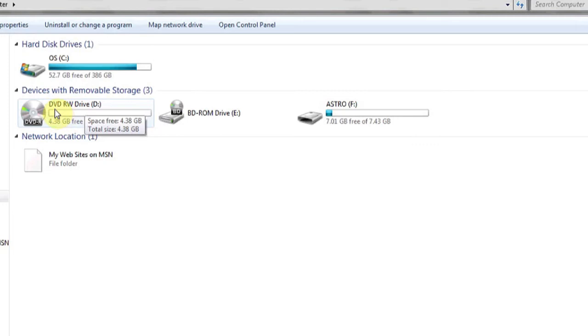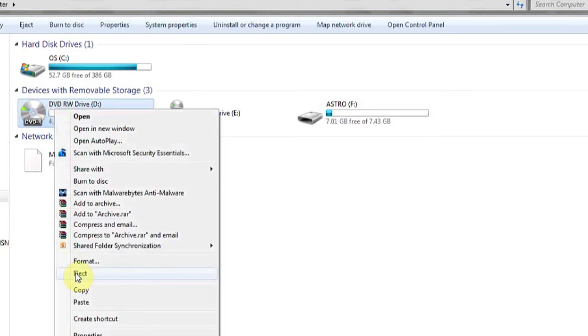If you'd like to eject it, you can right-click and scroll down to eject. This will remove the drive from the disk tray.